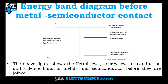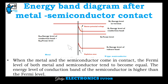This is the energy band diagram before metal-semiconductor contact. The figure shows the Fermi level and the energy levels of the conduction and valence bands of metal and semiconductor before they are joined. In the metal, the conduction band energy level and the Fermi level are the same. In the n-type semiconductor, the Fermi level, conduction band level, and valence band level are distinct. After contact, the Fermi levels of both metal and semiconductor tend to become equal, and the conduction band of the semiconductor is higher than the Fermi level.